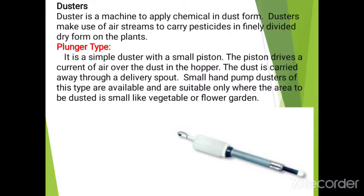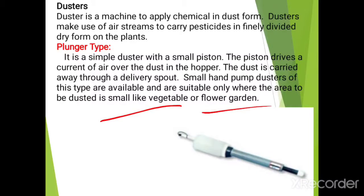Now, dusters. A duster is a machine to apply chemicals in dust form. Dusters make use of air streams to carry pesticides in a finely divided dry form onto the plant. The first type is the plunger type duster — the simplest type, with a small piston that drives a current of air over the dust in the hopper; the dust is carried away through a delivery spout. Small hand pump dusters of this type are suitable only for small areas like vegetable or flower gardens.